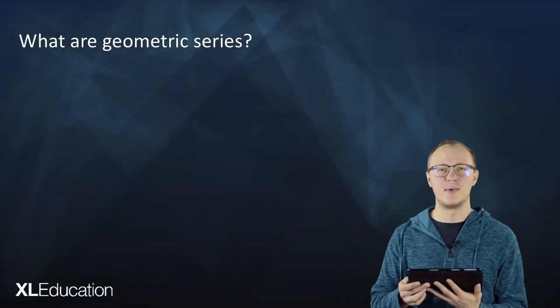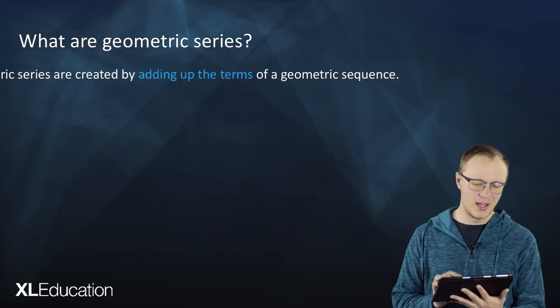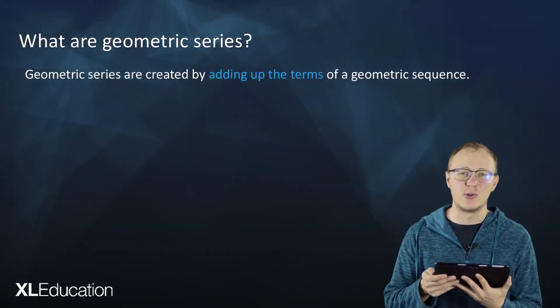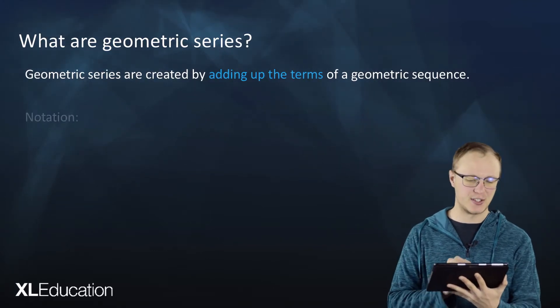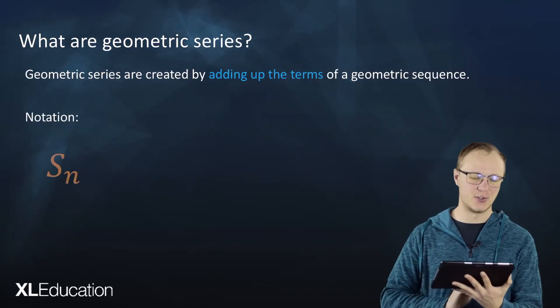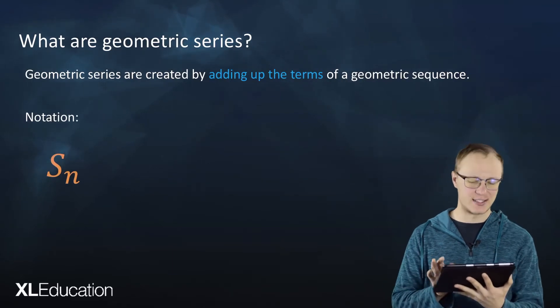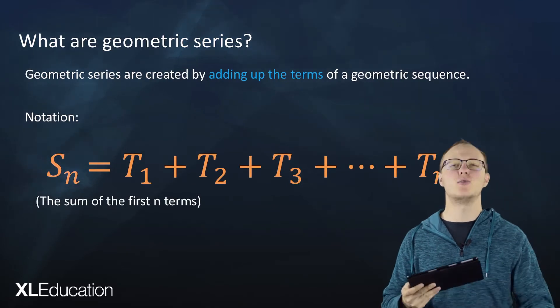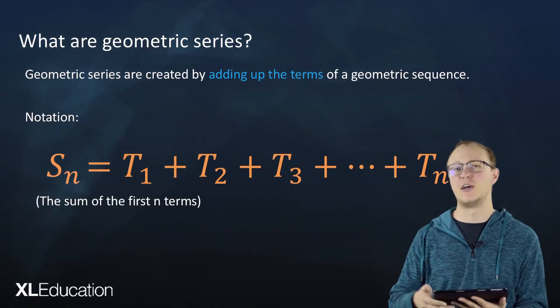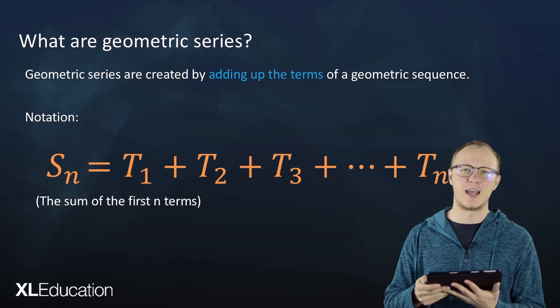What are geometric series? Geometric series are created by adding up the terms of a geometric sequence. The notation we're going to use is Sn, the sum of the first n terms, and that's equal to T1 plus T2 plus T3 all the way up until Tn.